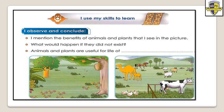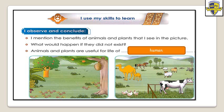What would happen if they didn't exist? If there are no animals or plants, there will be no life, because these animals and plants are the main source of life for food and many things. Animals and plants are useful for the life of humans — it's important for our life.